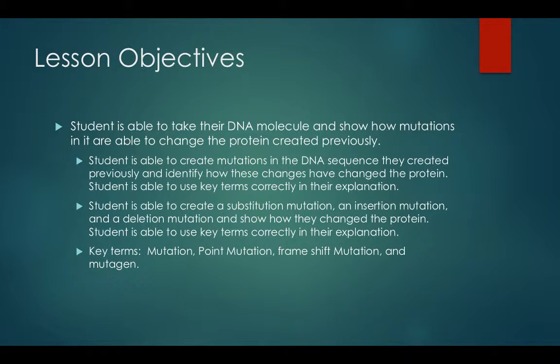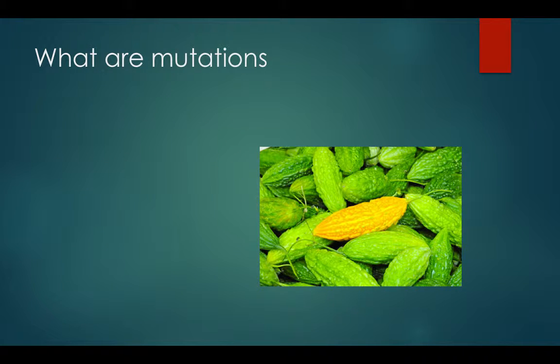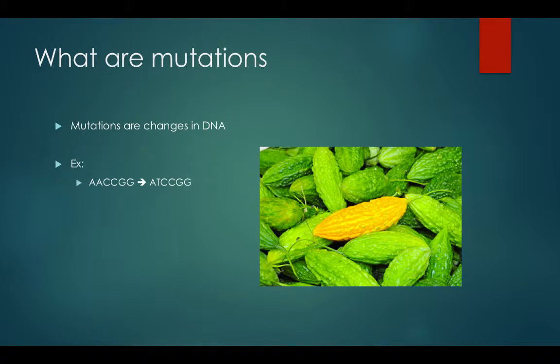Here are your key terms just in case you forgot. So what are mutations? Well, mutations are basically a fancy way of saying it's a change in the DNA. For example, let's say you have the sequence AACCGG. A mutation takes place and now you have ATCCGG. As you can tell, what's happened is that the AA has turned into AT.